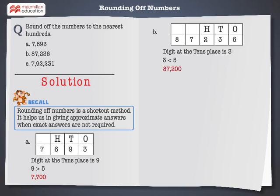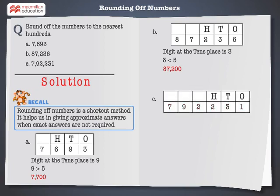Let us round off the next number now. In 7,92,231, the digit at the tens place is 3. And we know 3 is smaller than 5. So, it will be rounded off to the nearest lower hundreds, that is, 7,92,200.